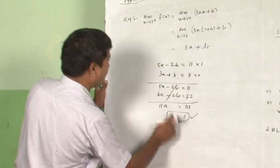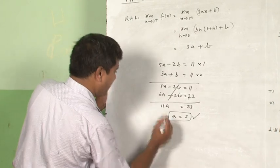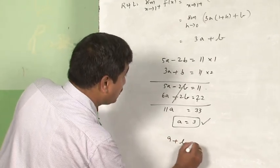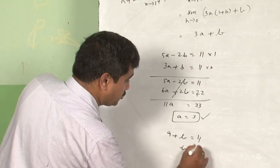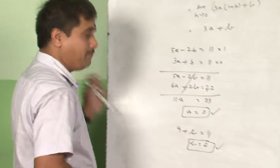Substituting this value you get in 3A plus B, you get 9 plus B is equal to 11, B is equal to 2. These are the values of A and B.